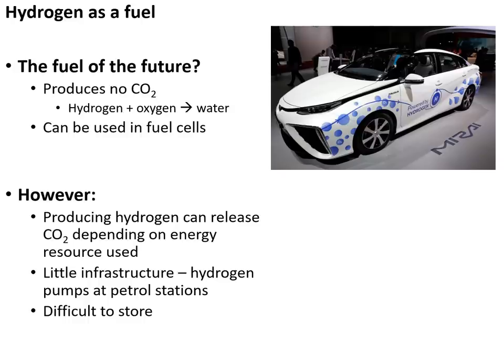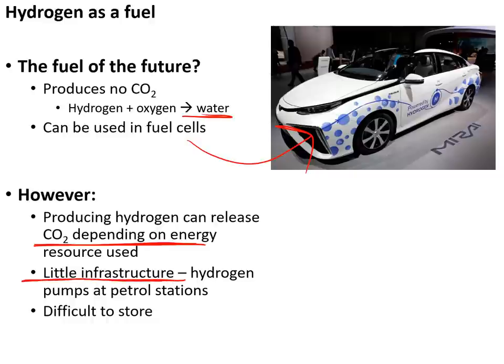Hydrogen is a potential fuel for the future — when burned it produces no carbon dioxide, just water, and it can also be used in fuel cells, a type of super-efficient battery. However, hydrogen doesn't exist naturally on Earth on its own so it must be manufactured, which can produce carbon dioxide depending on the energy source. There is also very little infrastructure, few hydrogen pumps at petrol stations, and it is difficult to store.